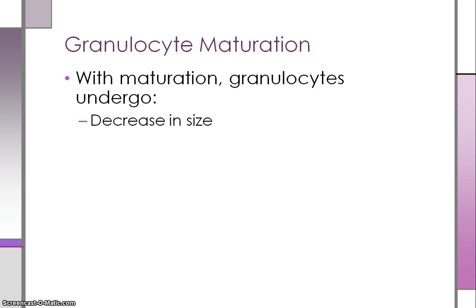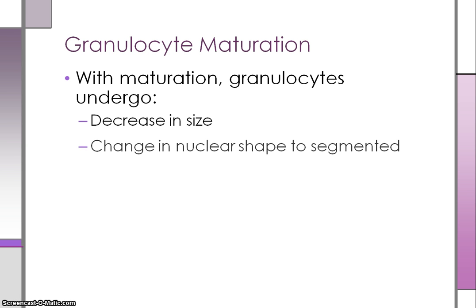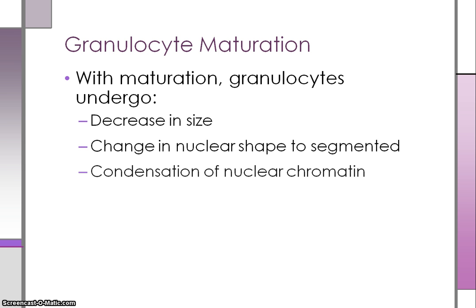In terms of the nucleus, the size also gets smaller and the shape changes from a round or oval shape to becoming indented and eventually segmented. The nuclear chromatin transitions from loose and fine to coarse and condensed.